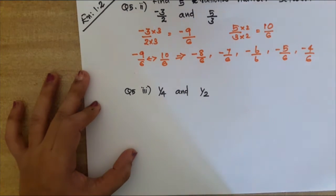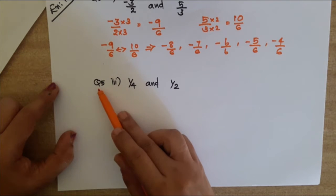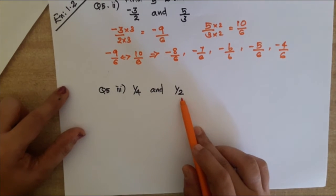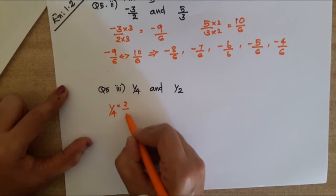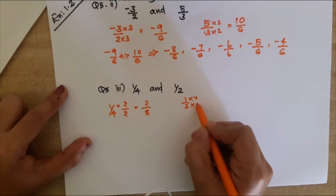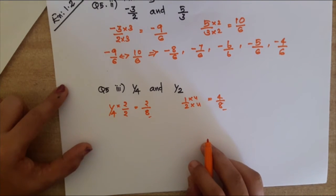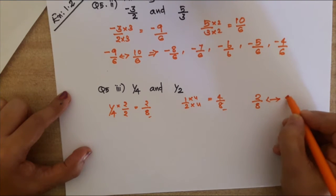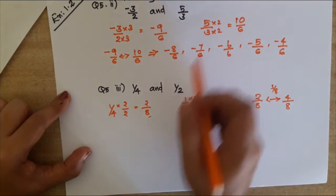The third question in Q5: find five rational numbers between 1/4 and 1/2. First, make the denominators the same — multiply 1/4 by 2/2 to get 2/8, and multiply 1/2 by 4/4 to get 4/8. But there is only one number between 2/8 and 4/8, which is 3/8.